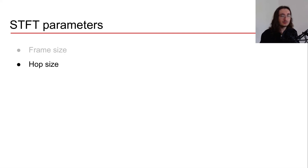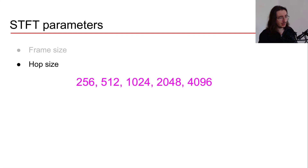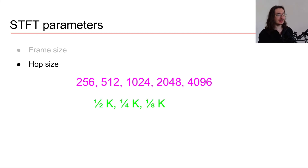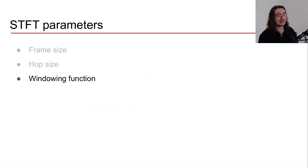The second important parameter is hop size — the number of samples we slide to the right when taking a new frame. Typical values are powers of two: 256, 512, and so on. It can also be defined as a fraction of the frame size, such as one-half or one-eighth of the frame size, giving both absolute and relative definitions.